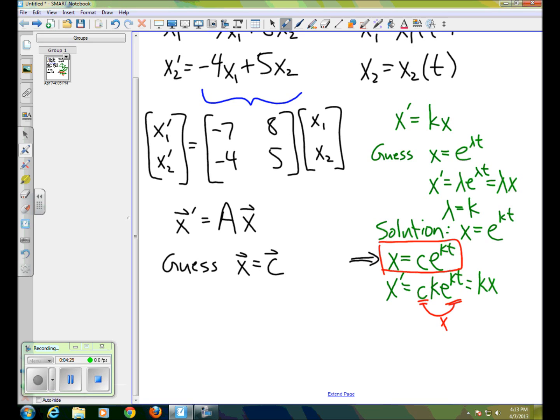But the constant in this case will be a vector. So we'll guess that x looks like some constant vector c times e to the lambda t, where c equals c1, c2. Those are its components. All right, so what I want to do is then put this in to our equation and see what happens.